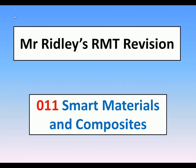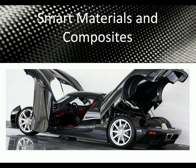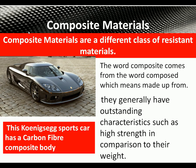We're looking at Mr. Ridley's RMT revision, number 11: smart materials and composites. Composite materials are a different class of resistant materials. The word 'composite' comes from 'composed,' meaning made up from. They generally have two different components which, when added together, have outstanding characteristics such as high strength in comparison to their weight.